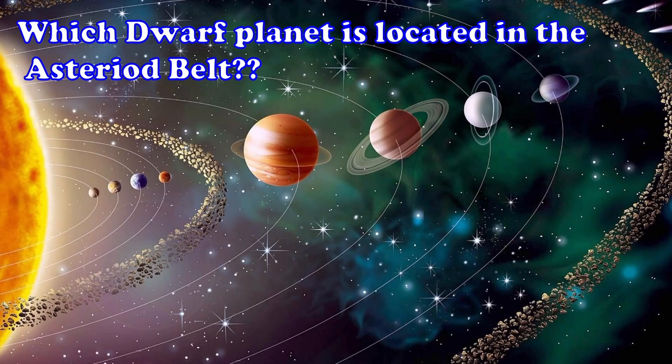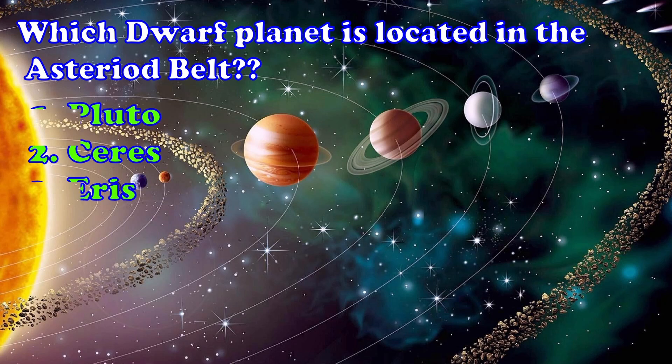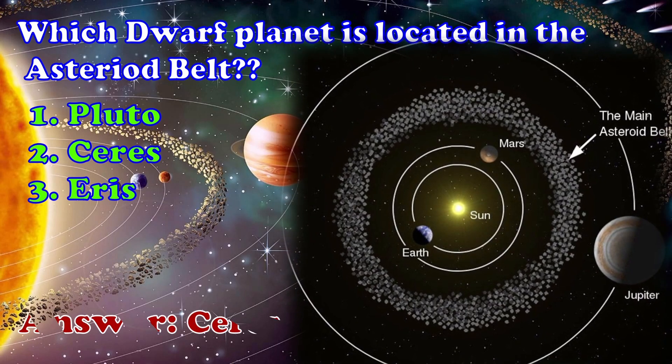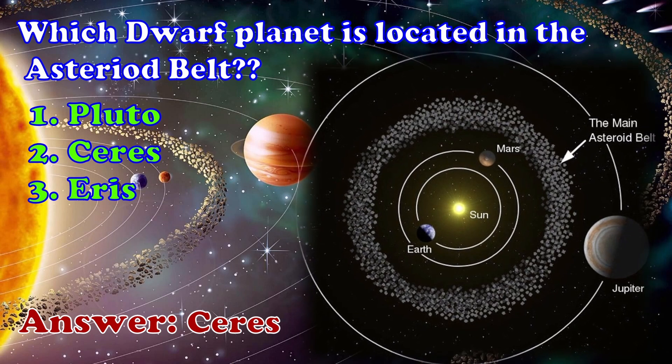Which dwarf planet is located in the Asteroid Belt? 1. Pluto 2. Ceres 3. Eris. The answer is Ceres.